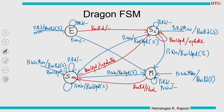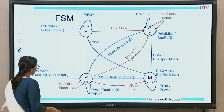In state SM, if a bus read happens — a new reader has come — give the data but do not change state (self-loop). Cross-checking: we have done all bus read and bus update transitions. In state E, we will not get a bus update because before any bus update arrives, a bus read would have already moved the cache out of E into SC or SM.